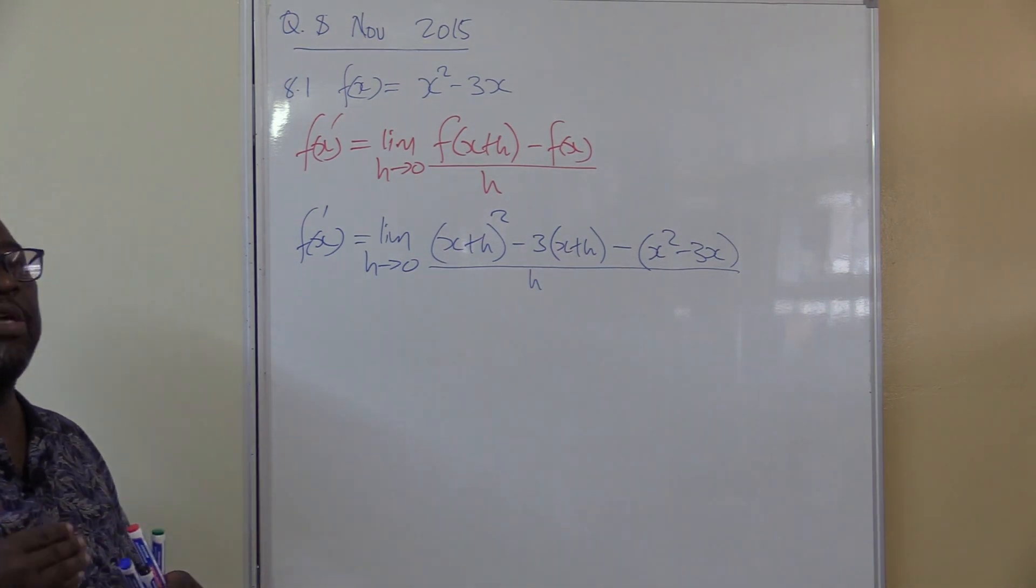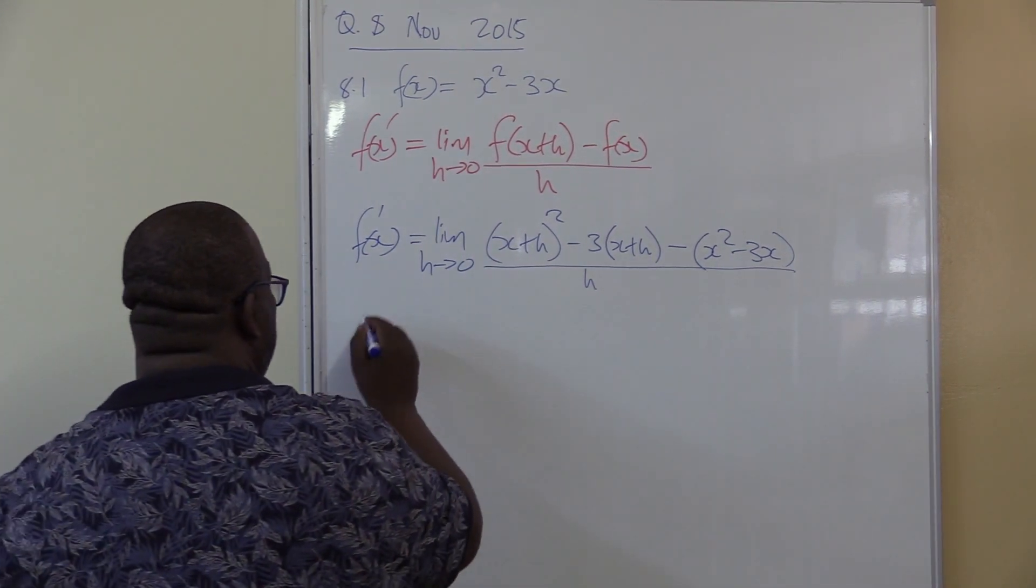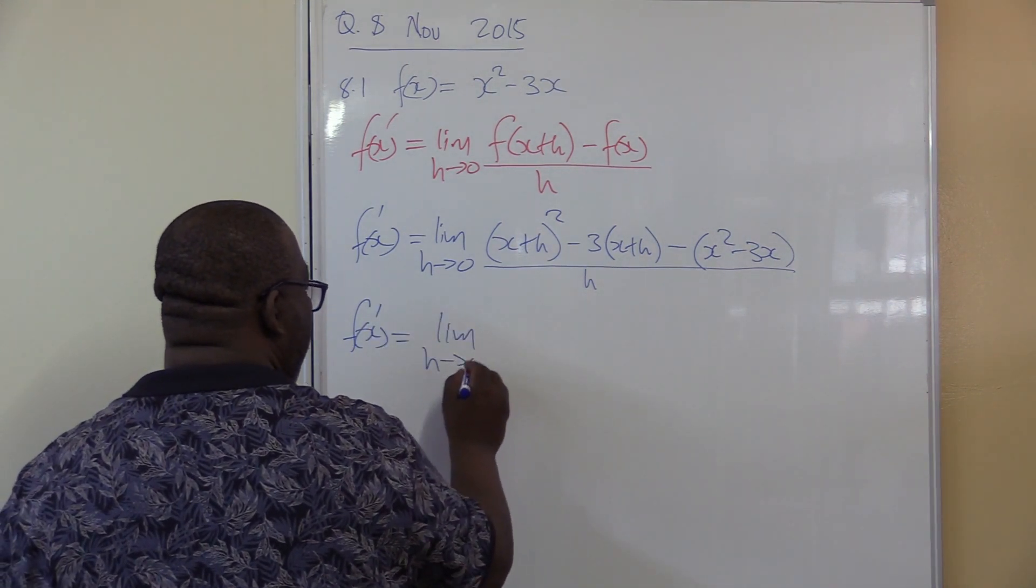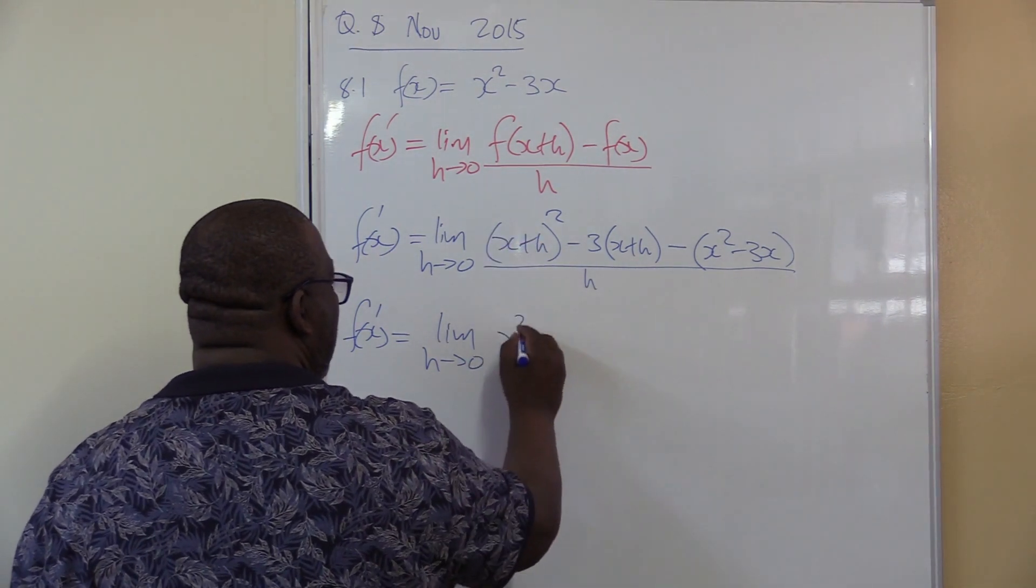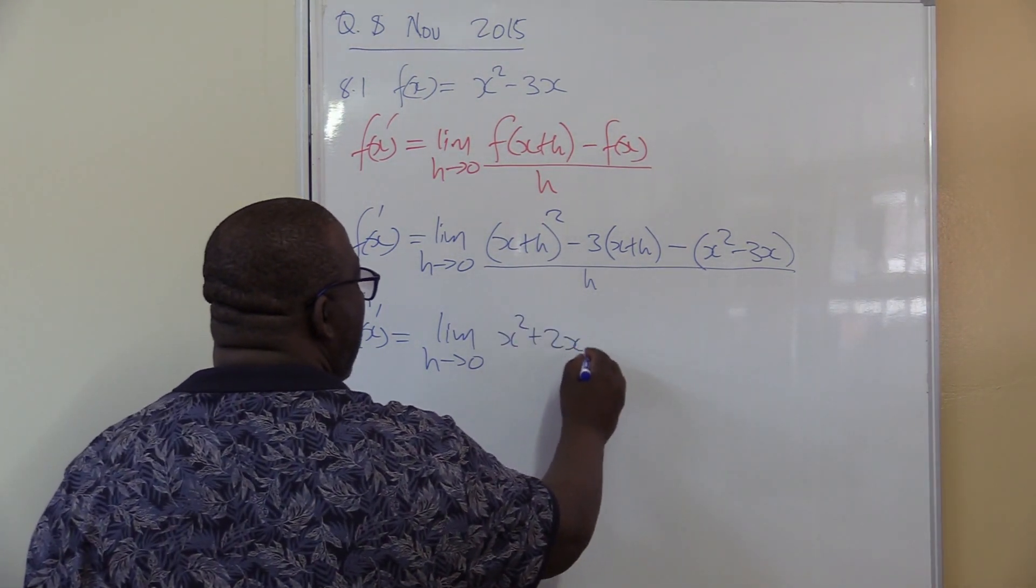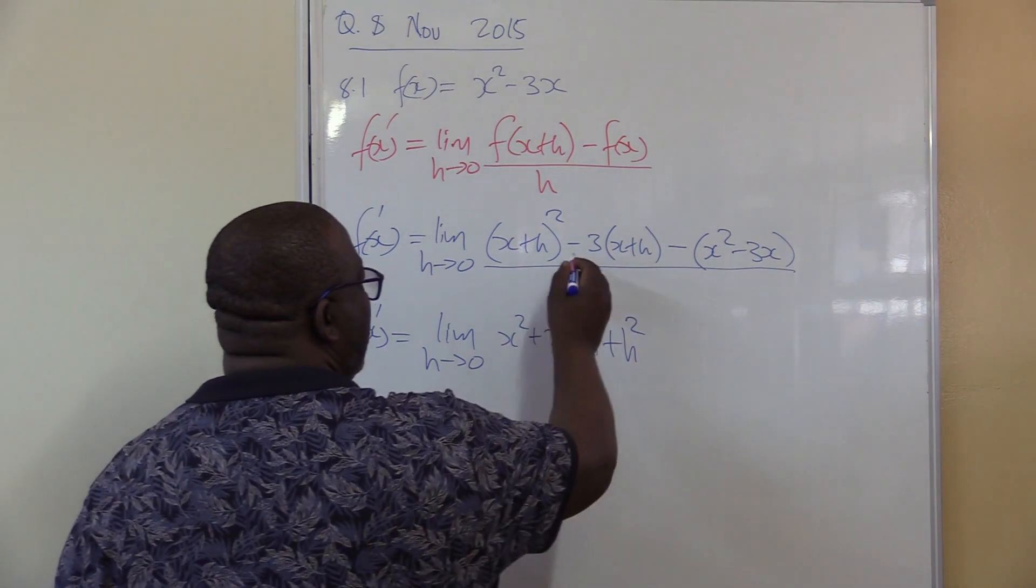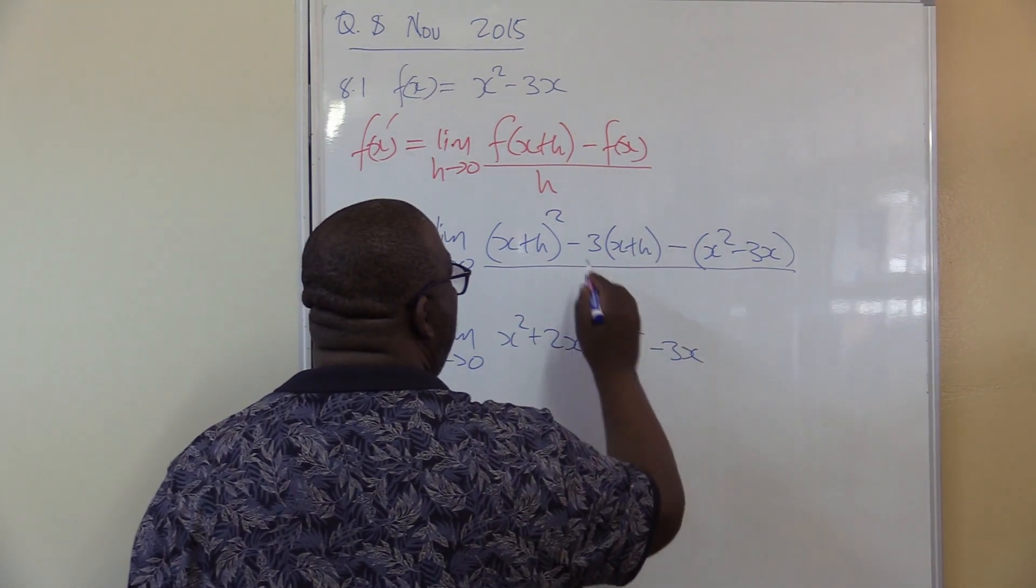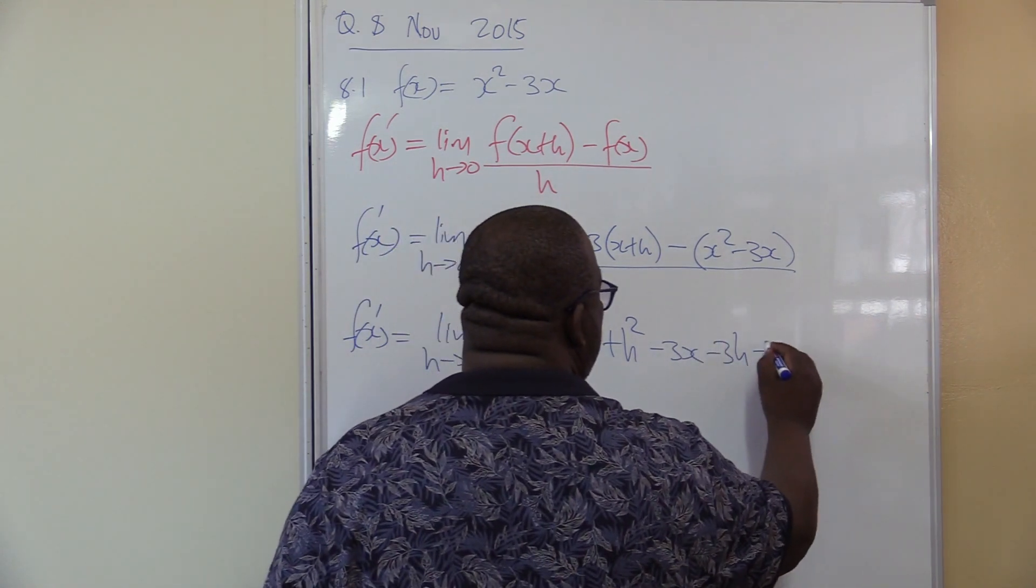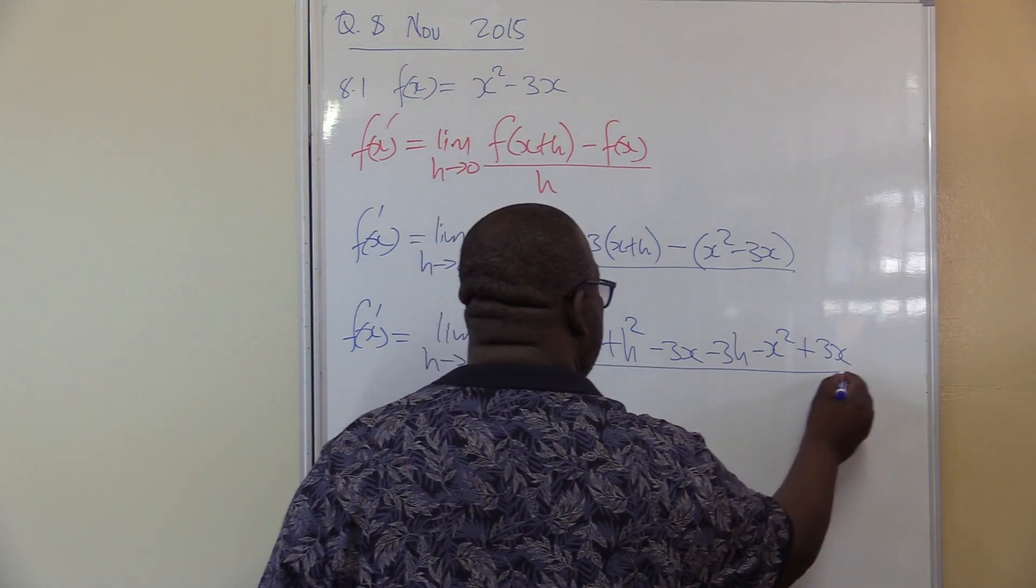It's the same story again, where you go back to your grade 8, grade 9, and get assistance from there, where you square this binomial. f of x prime will then be equals to the limit as h approaches zero. x times x, it is x squared. x times h, xh, double that. It's going to be 2xh. Then h times h is going to give us h squared. Let's break this other bracket. This times that, it's going to be minus 3x. Minus 3 times h is going to be minus 3h. This times that, it's going to be minus x squared. This and that is going to be plus 3x. This is all over h.